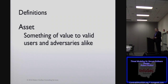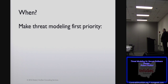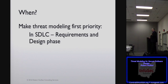Asset — anything of value, and maybe even further, anything that you're worried about losing. That's a big thing. So when do you do this? Threat modeling really should be your first priority. In the SDLC, if you're following any kind of software development lifecycle, it should be one of the first things that you do.